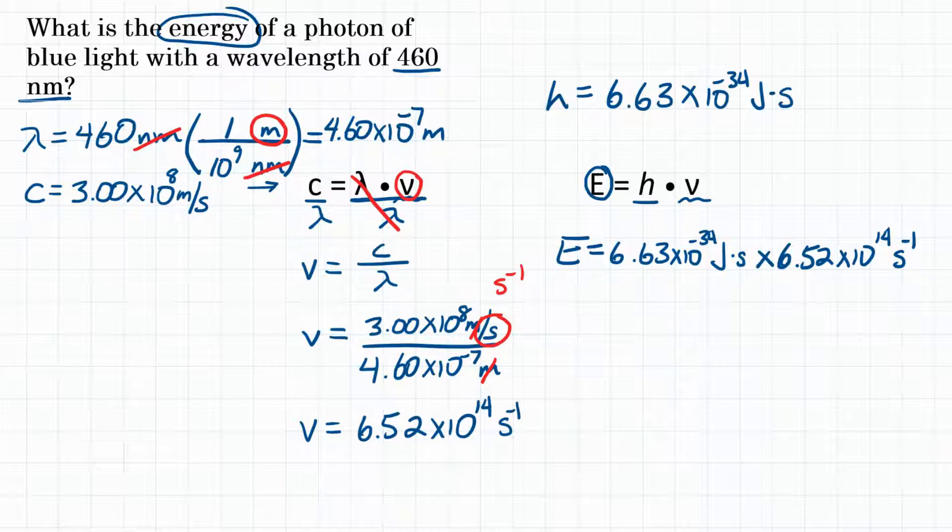Looking at our units, with Planck's constant, we have joules seconds, and with our frequency, we have seconds to the negative 1 power. Seconds times seconds to the negative 1 are going to cancel out, because it's like they're on the top and on bottom of a fraction. That's going to leave us with only joules, a unit of energy, which is what we are solving for.